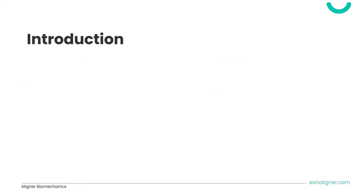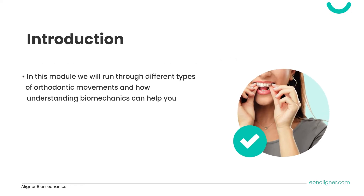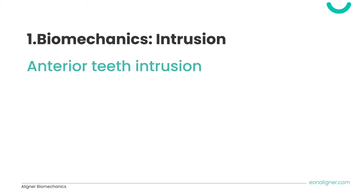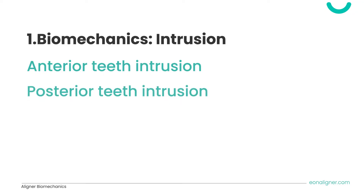In this module, we will run through the different types of orthodontic movements and how understanding biomechanics can help you achieve them with higher predictability. First, we will talk about the biomechanics of intrusion. When talking about intrusion with clear aligners, it is best to split it into two groups: anterior teeth intrusion and posterior teeth intrusion.